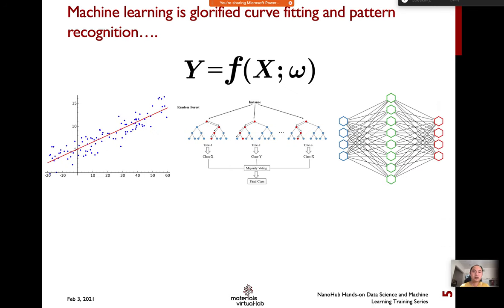Machine learning is the study of computer algorithms that improve automatically through experience. The experience here is just the materials data we already have at hand. The eventual goal is using machine learning with materials data to construct a model that can replace or accelerate experiments or ab initio calculations. As a materials scientist, we can just treat machine learning as a glorified curve fitting and pattern recognition — essentially modeling behavior that maps the input to the output. The input is usually our material structure and the output would be the property we're interested in, for example the formation energy, the band gap, etc.